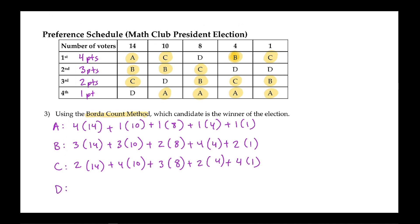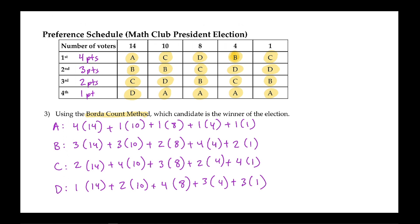For Dan, in the first pile they ranked him fourth place — one point times 14. In the next pile he was ranked third — two points times 10. In the following pile he received first place votes — four points times eight. In the next pile he received second place votes — three points times four. And for the last pile he received a second place vote — three points times one.